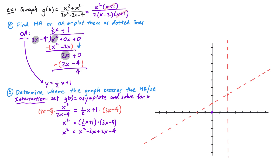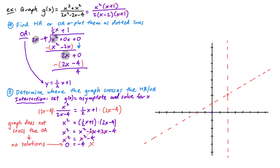The minus 2x and plus 2x cancel out, leaving x squared equals x squared minus 4. Subtracting x squared from both sides gives 0 equals negative 4, which is not a true statement. This means the equation has no solutions — our graph does not cross our oblique asymptote.